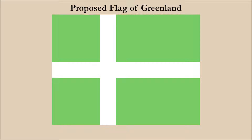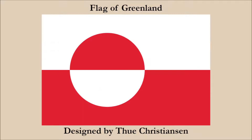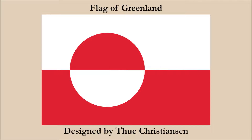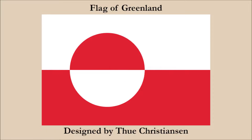One contender was designed by Sven Tito Ashen, who was an Argentinian-Danish writer and author on heraldry and co-founder of the Scandinavian Society of Heraldry. His proposal was a simple white Nordic cross on a green field. We assume the green refers to the name Greenland, the white probably refers to the white environment of ice and snow, but it also creates a strong link to the flag of Denmark, which also has a white Nordic cross. The other contender was the design which was ultimately chosen as the flag of Greenland. The two flags went head-to-head in a vote held by a flag design committee. In the final vote, the winning design won by 14 votes to 11.